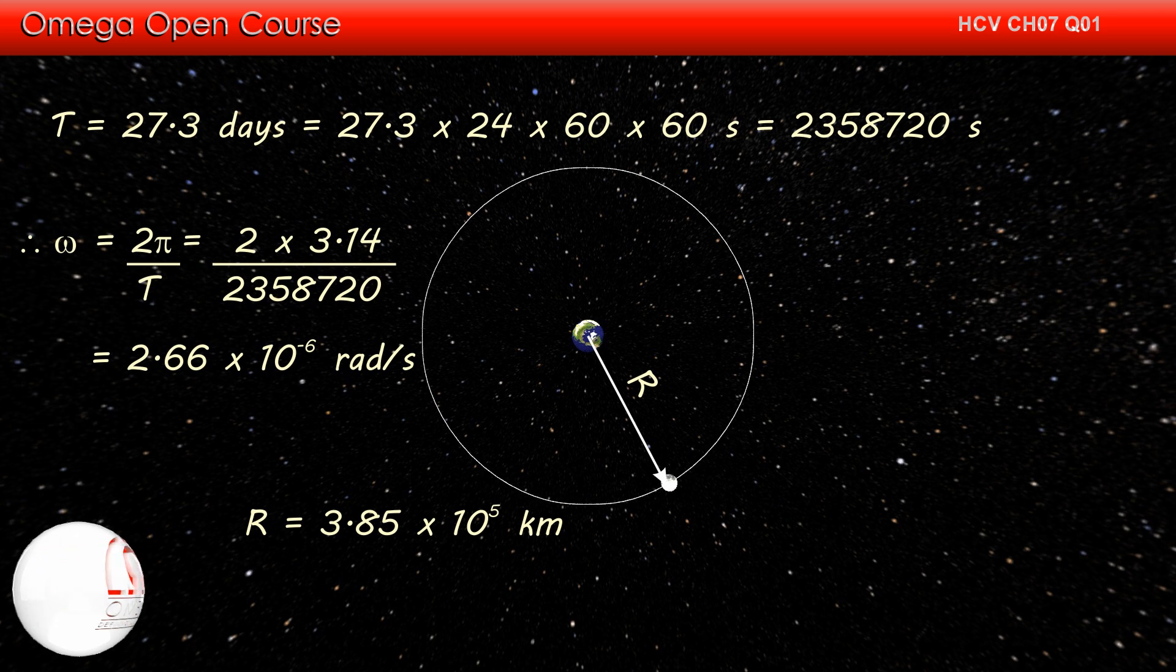Radius of the circular path on which the Moon moves is equal to the distance of Moon from the Earth, i.e. 3.85 into 10 to the power 5 km or 3.85 into 10 to the power 8 meter.